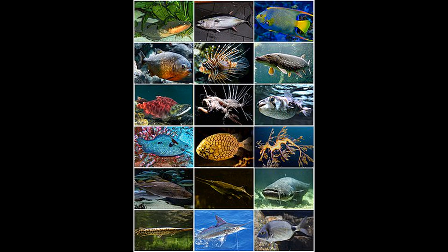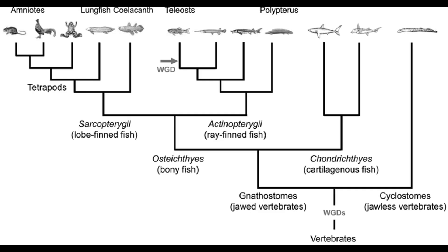Now we can turn our attention to the clade that represents half of all vertebrate diversity, Actinopterygii, more commonly known as the ray-finned fish. The clade joining Sarcopterygii with Actinopterygii is called Osteichthyes, the bony fish, and their common ancestor lived about 430 million years ago in the late Silurian.